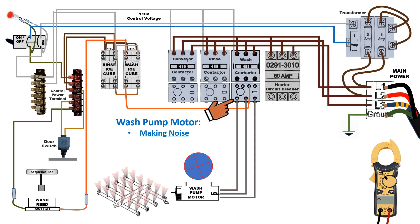We take a look at the current flow through the wash motor contactor. High voltage of main power comes in through the top of the contactor, and when the contactor is engaged, power transmits through the contactor to the wash pump motor.